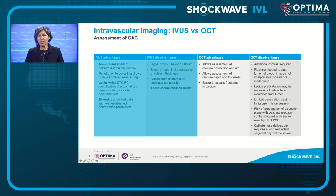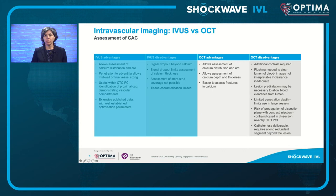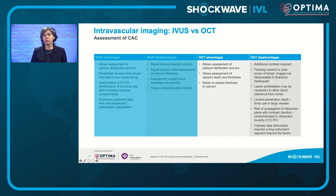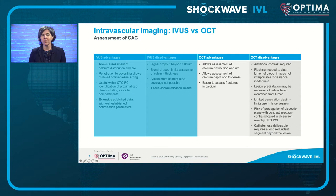Advantages of OCT in addition to measuring arc and length of calcium include the ability to quantitatively measure depth and thickness, and it's easier to detect calcium fracture. Disadvantages include the requirement for additional contrast volume and clearance of the vessel of blood to get adequate imaging — sometimes requiring lesion preparation or pre-dilatation before a baseline OCT run. There is limited penetration into the vessel wall, making it difficult to size larger vessels, and in CTO PCI there's a concern that injecting contrast for OCT can extend dissection planes or extraplaque tracks.